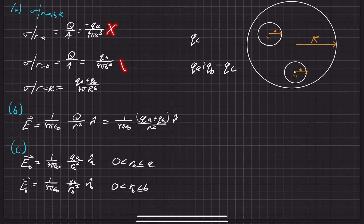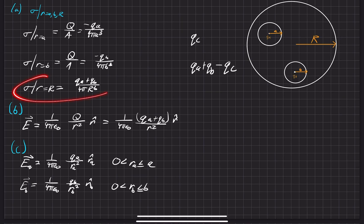These ones don't change at all, but the surface charge density changes. I'll rewrite this in orange: the surface charge density turns into QA plus QB minus QC, divided by the surface area of the large sphere, which is 4πR cubed.